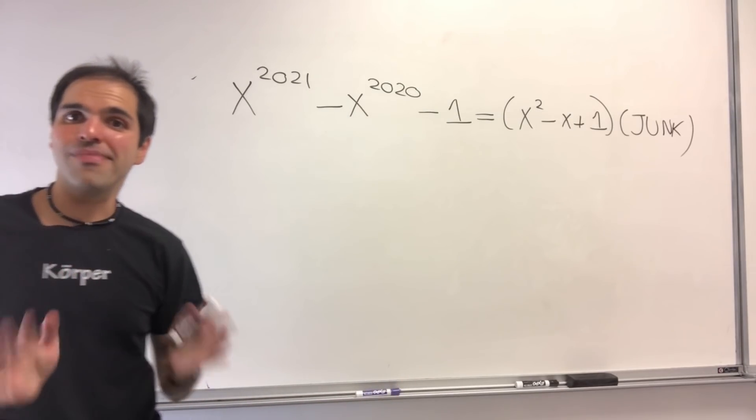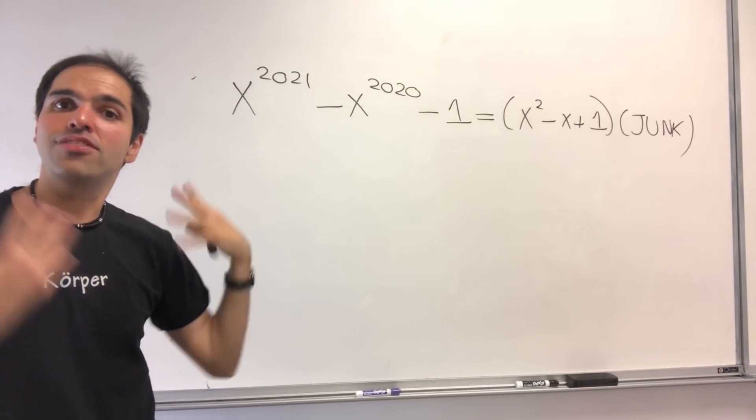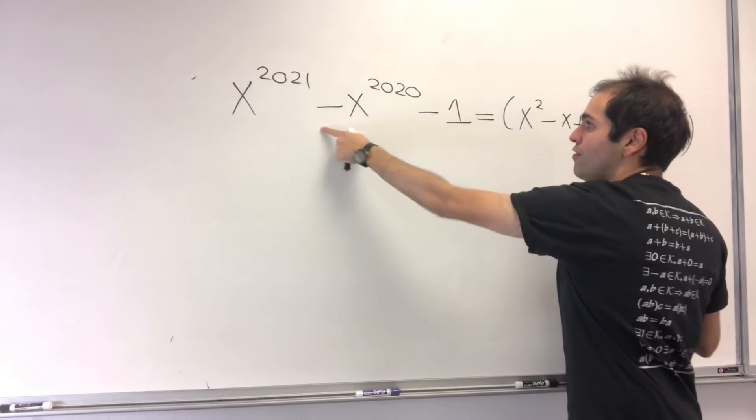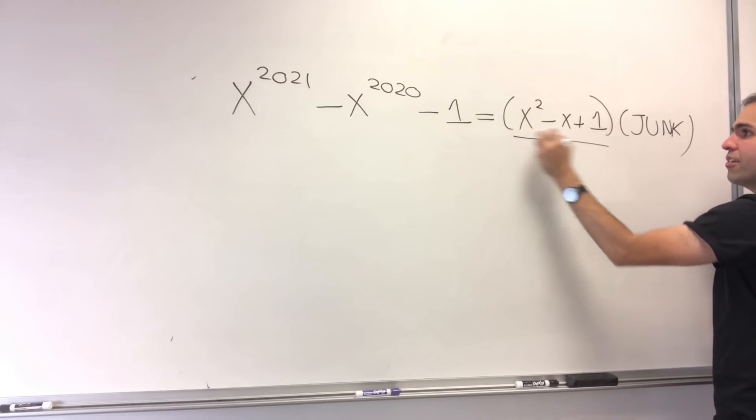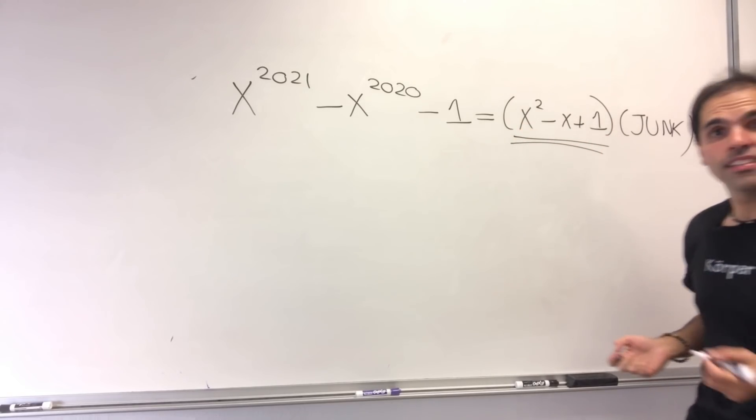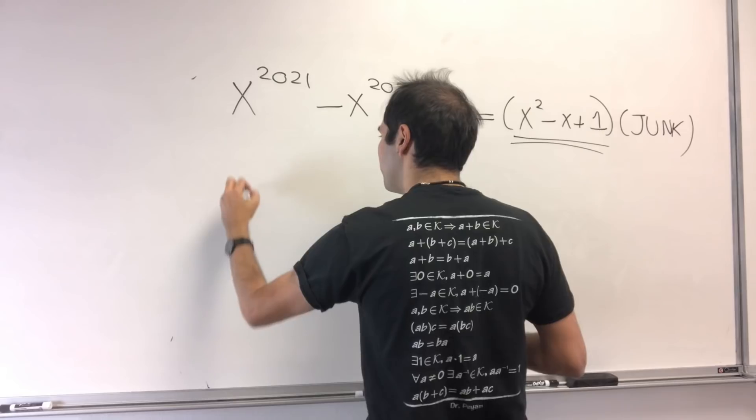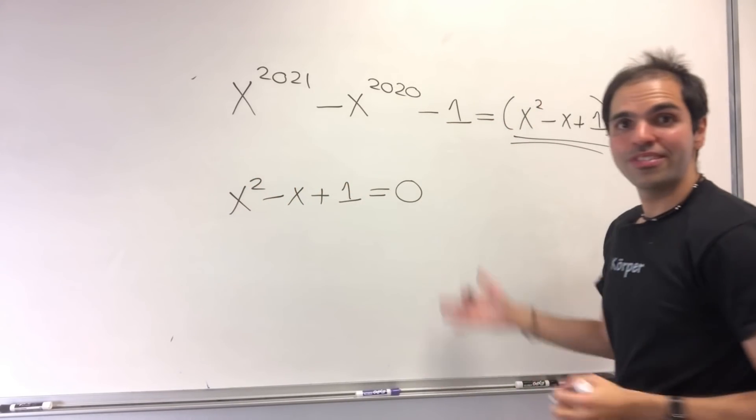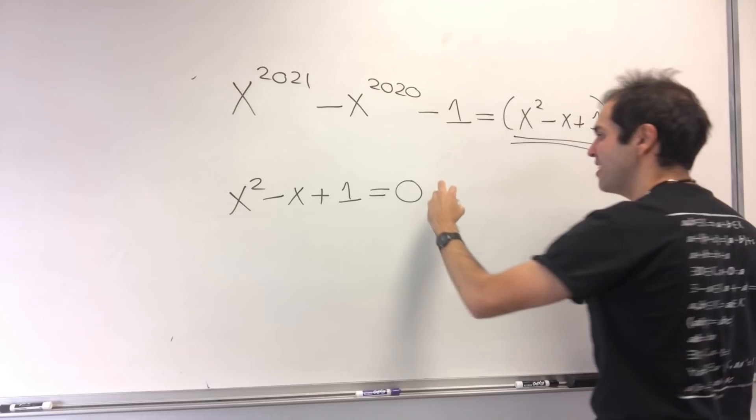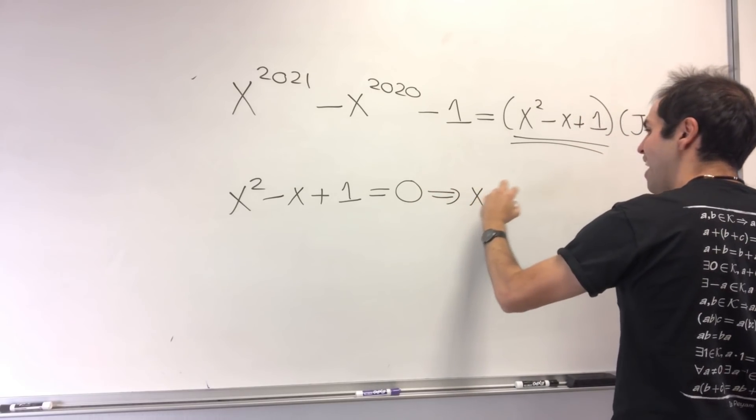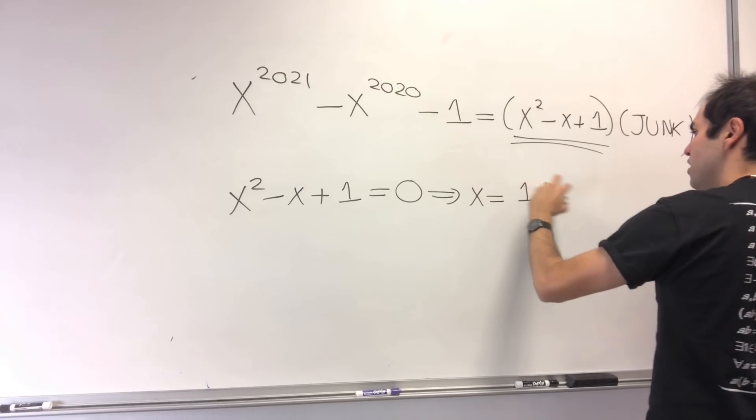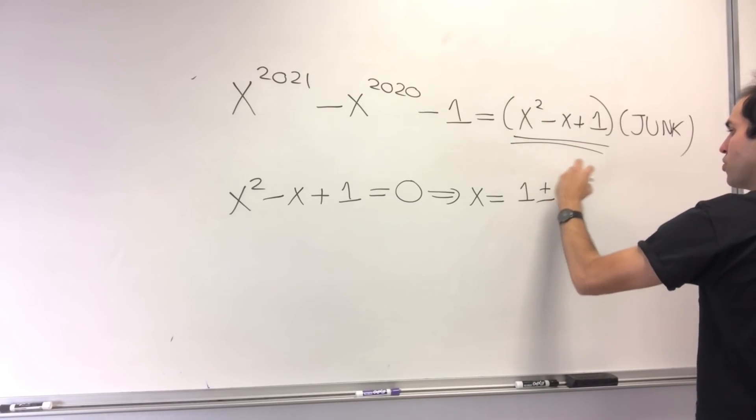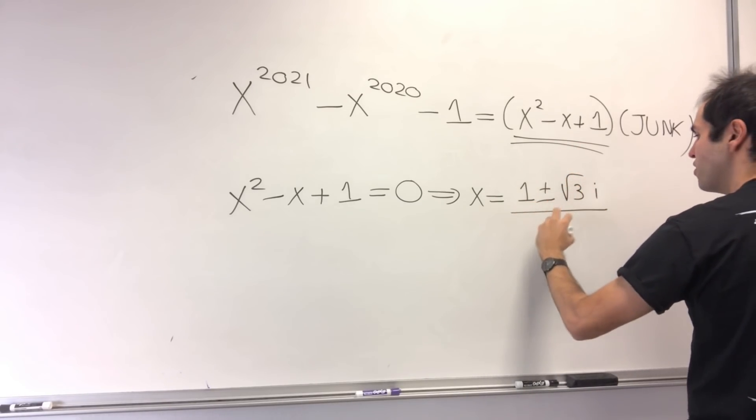So, in particular, let's come back to our question of finding some roots of this equation. Well, if you set this equal to 0, this in particular implies x^2 - x + 1 = 0. And you can just use the quadratic formula to get x is (1 ± √(1 - 4))/2, so (1 ± √3i)/2.